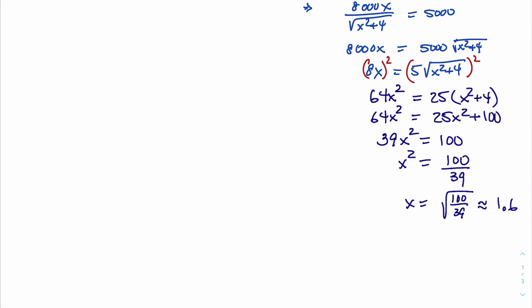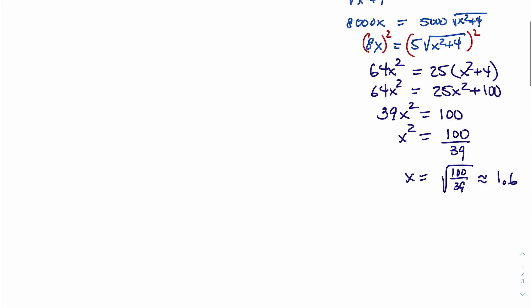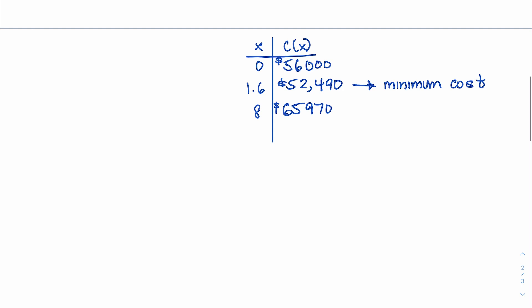So we substitute 1.6 into the cost function. We substitute 0 and 8 because those were the endpoints. And here is the analysis. So when x equals 0, meaning we're going straight across the river and then 8 miles down, the total cost is $56,000.